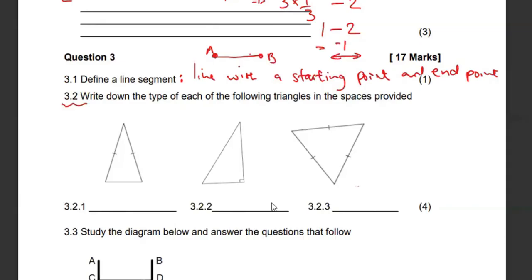Then 3.2, write down the type of each of the following triangles in the spaces. What type of triangle is this where two sides are equal? This is known as an isosceles triangle. This triangle with a 90 degree will be known as a right angled triangle. And then a triangle with all these three sides equal, we call it equilateral triangle.